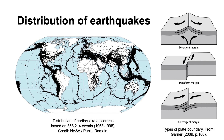When we plot the distribution of earthquake epicentres on a world map, we find that the great majority of earthquakes occur at the active margins of the Earth's tectonic plates. At divergent margins, where the plates are moving apart, or at transform margins, where the plates are sliding past one another, the focus of the earthquakes is typically shallow, rarely exceeding 40 miles.